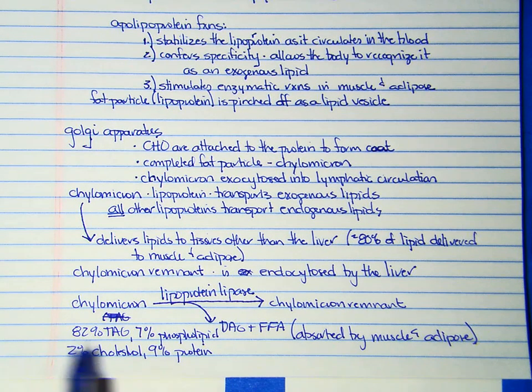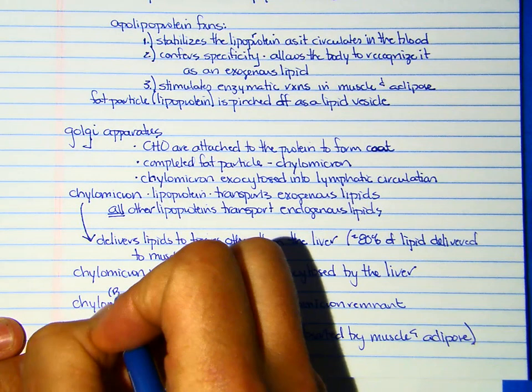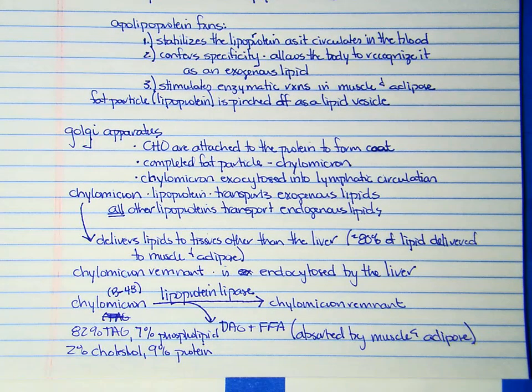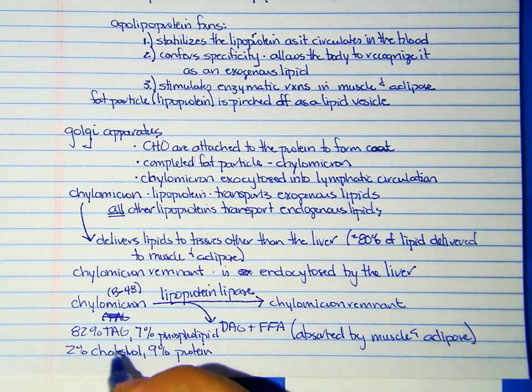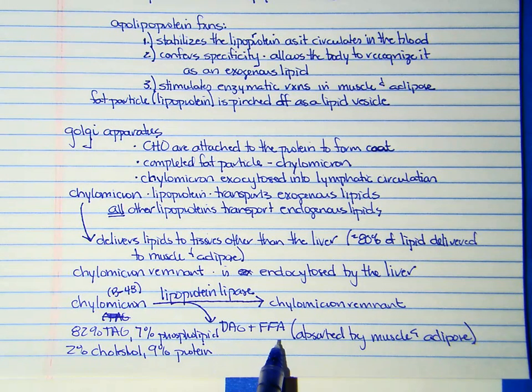And so this is really important. We're going to take the chylomicron which has that protein B48 attached to it. And the lipoprotein lipase is going to recognize that B48 and say, hey, this is an exogenous lipid. It will grab a hold of it, and then it will take the TAG that's inside of the chylomicron and make a DAG and a free fatty acid, which are absorbed by the muscle and the adipose.